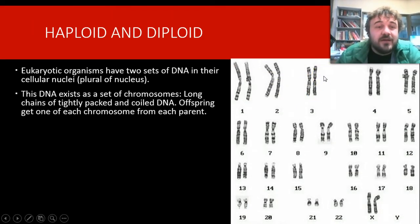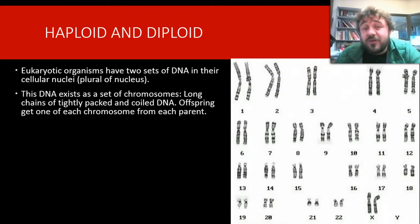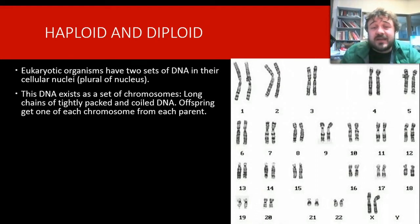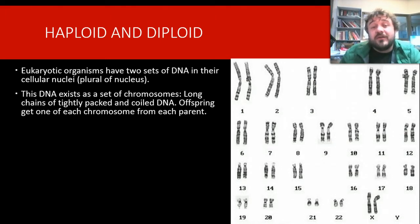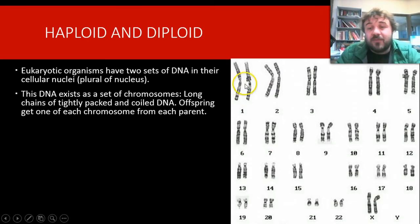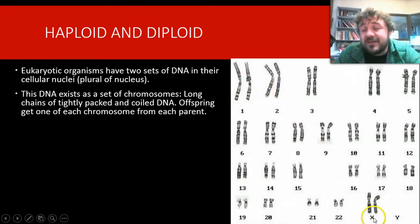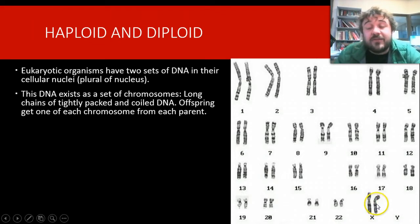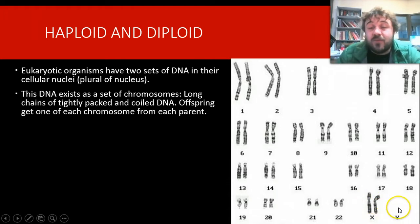You've got a separate copy for each chromosome. The DNA exists as chromosomes, which are long chains of very tightly packed and coiled DNA. Offspring get one chromosome from each parent at each number — so chromosome 1, you get one from mum and one from dad; chromosome 2, one from mum and one from dad, all the way down to chromosome X. If you're female, you get one from mum and one from dad; if you're male, you get one X chromosome from mum only and one Y chromosome from dad only.